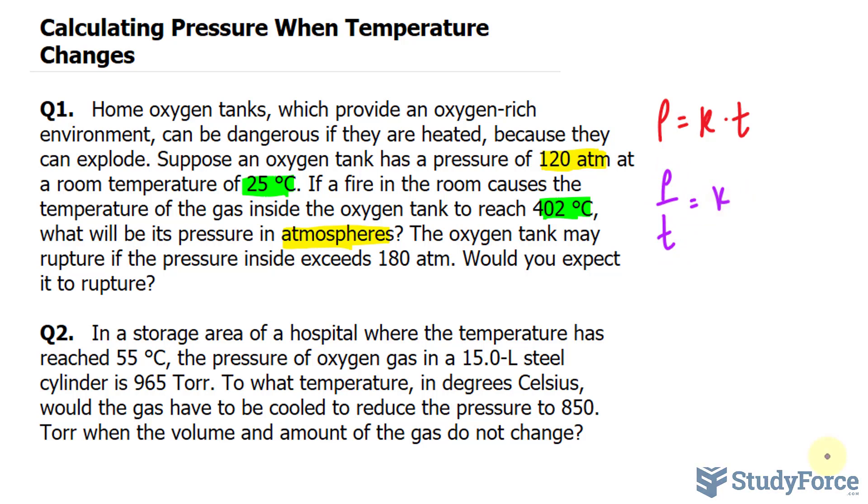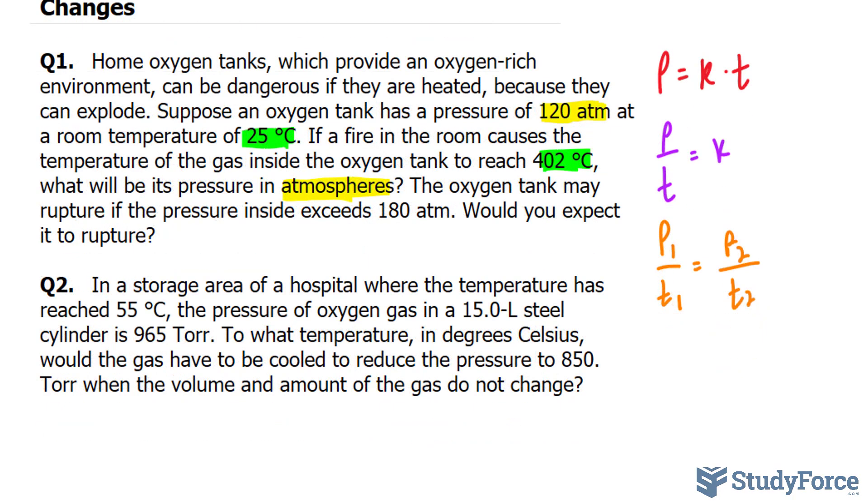That being said, whenever we want to show a change in pressure and temperature in a closed system, we can say that p1 over t1 is equal to p2 over t2. Now, going back to the question, we know what the initial pressure was. It's 120, so I'll replace p sub 1 with 120 atm.